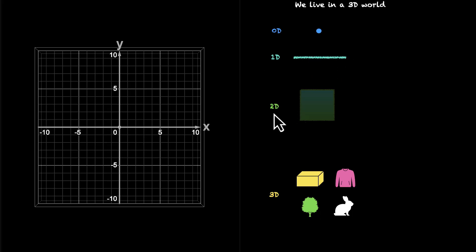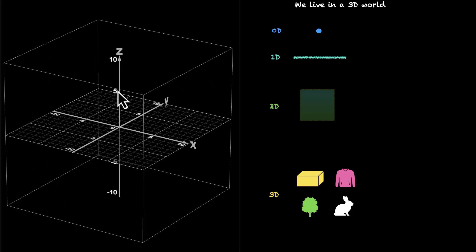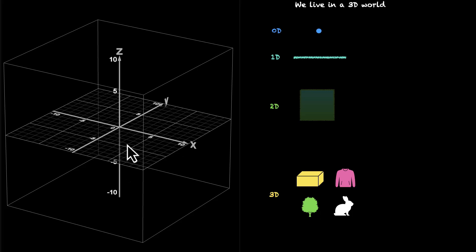When you're in 2D, you have two directions — the x-axis and the y-axis. But when you're in 3D, you have three directions, and for that we need three axes: X, Y, and Z. You can move forward and backward, you can move left and right, and you can move top and bottom. So you have three perpendicular directions to play with — this is what makes things three dimensional.